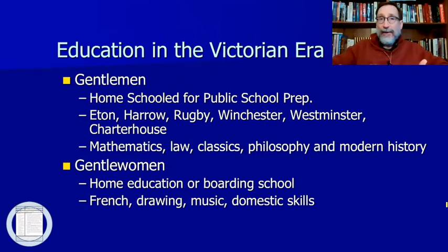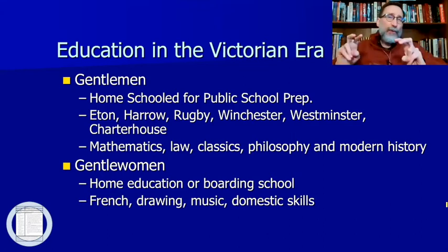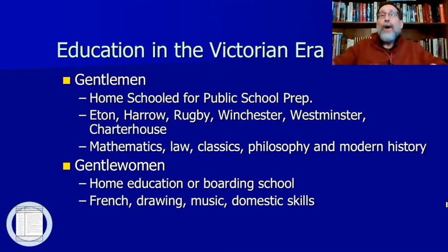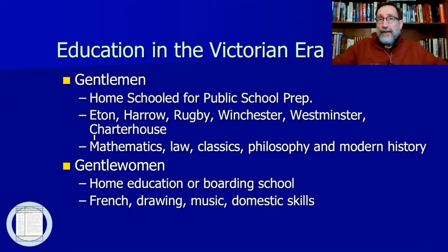During the Victorian era, expectations were very different for men than for women. Gentlemen were homeschooled until they could go to public prep schools — and 'public school' then wasn't what it means to us today. It was something only wealthier individuals could attend; if you were part of the everyday working class, school wasn't something you did. You didn't learn to read and write — there was a very low literacy rate among the working class. Schools like Eton, Harrow, Rugby, and Winchester were some of the more exclusive schools, and they're still around today.